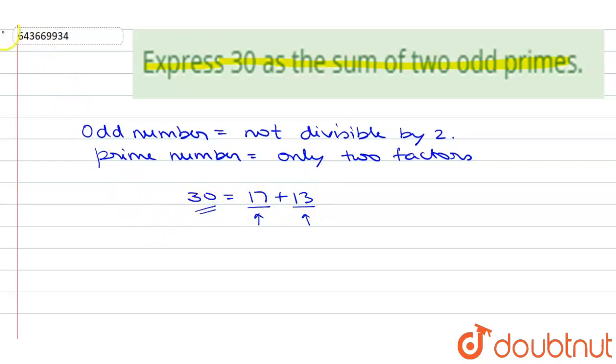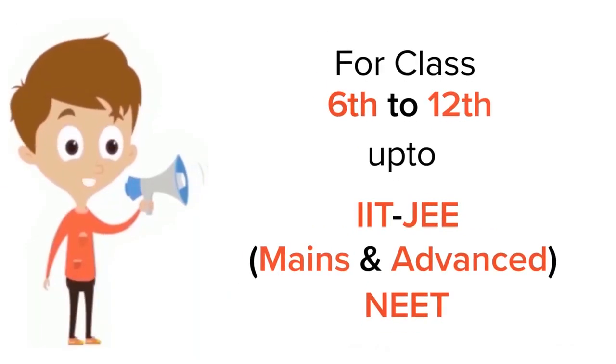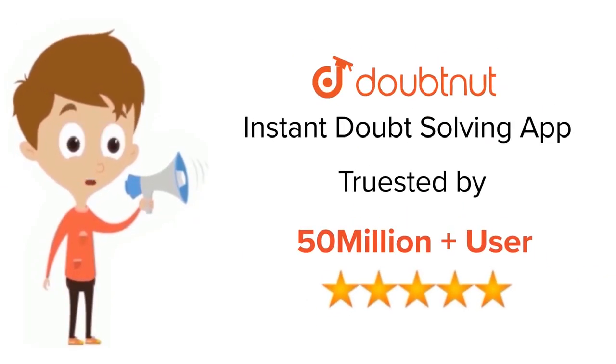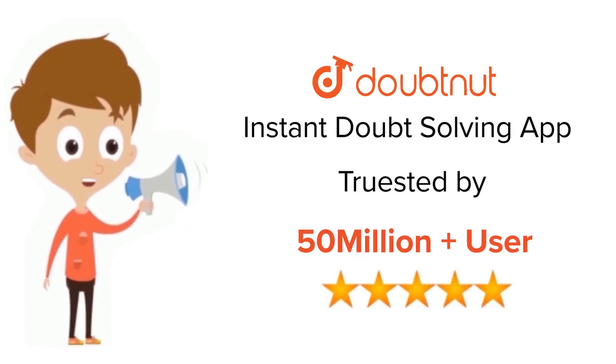I hope this answered your question. Thank you. For class 6 to 12, IIT JEE and NEET level — trusted by more than 5 crore students. Download the Doubtnut app today.